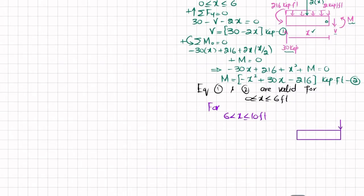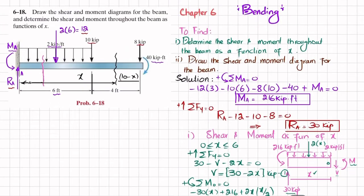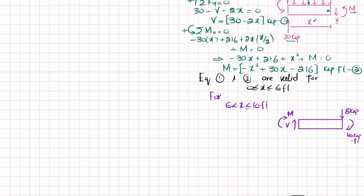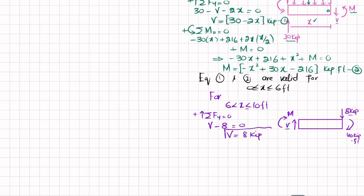In this region, the free body diagram shows a point load of 8 kips downward at the free end and an external moment of 40 kip-feet. At the cut we have shear force V upward and moment M. Applying sum of forces in y-direction equal to zero: V minus 8 equals zero, so the shear force V equals 8 kips for 6 < x ≤ 10 feet. This is equation number 3.